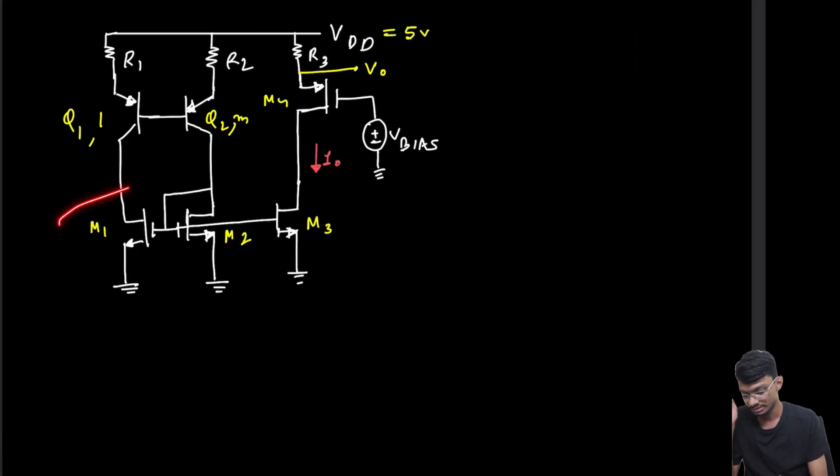First, what we need to observe is these three MOSFETs. As they are in saturation, this MOSFET will act as a current mirror as the VGS for all of them are the same. As nothing is given about channel modulation, we'll just ignore it. So if current I flows through here, this I current will also flow through here. Basically, I0 equals I.